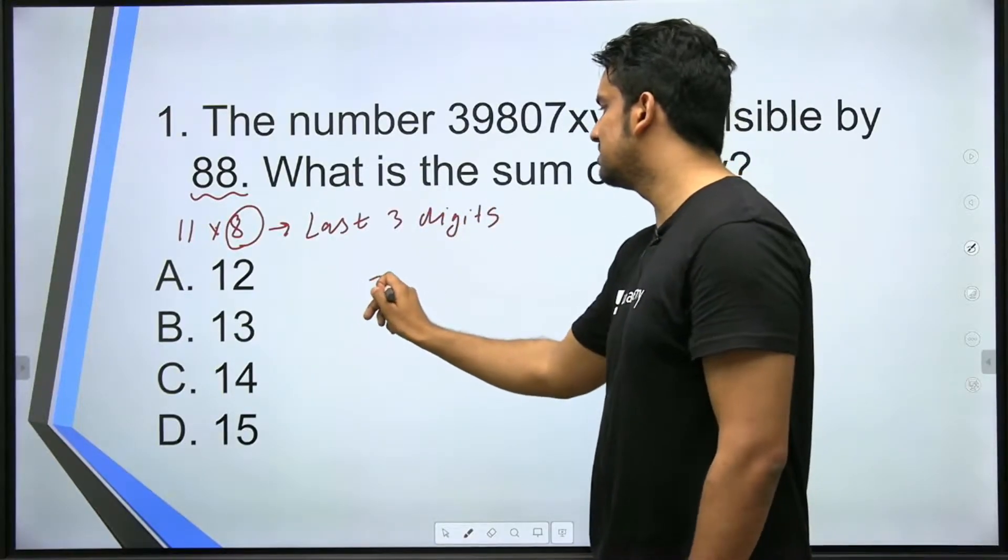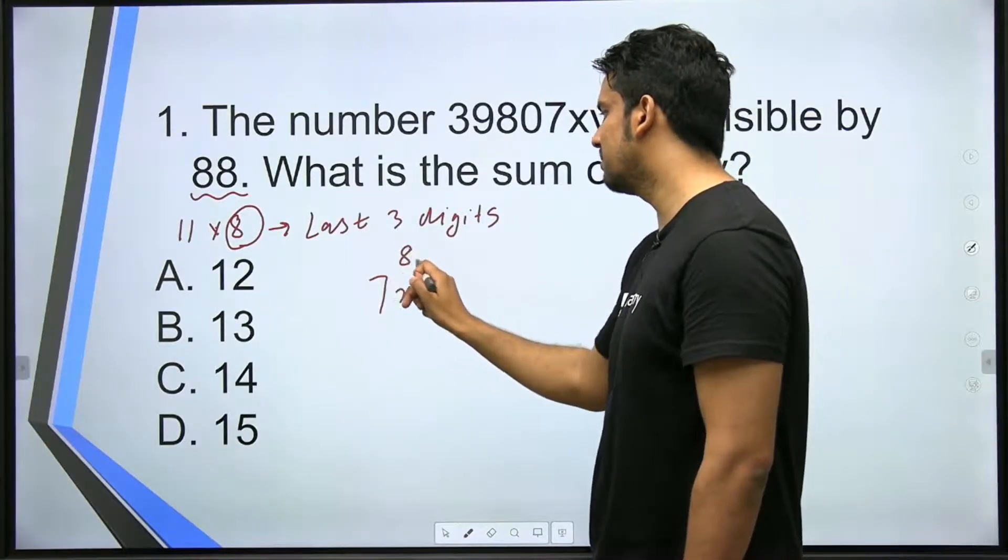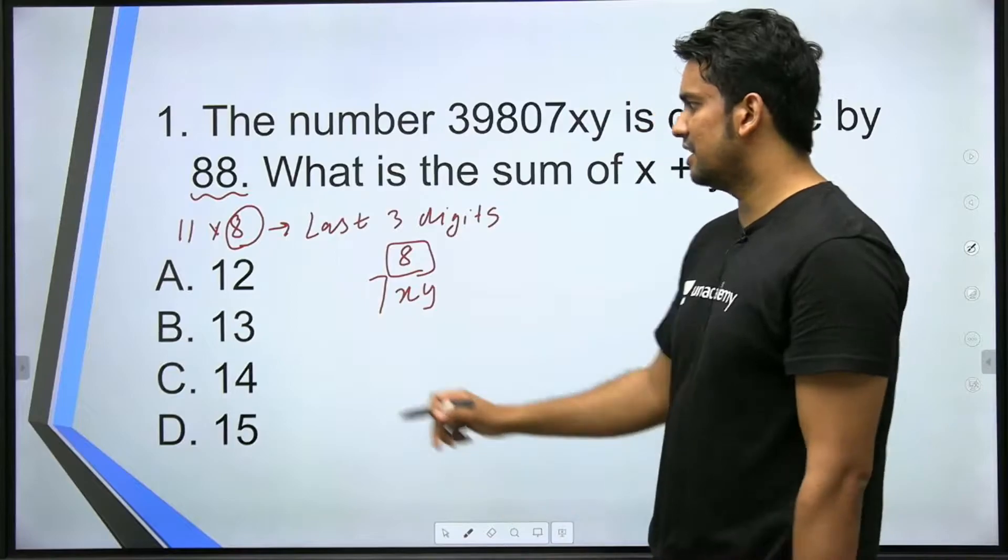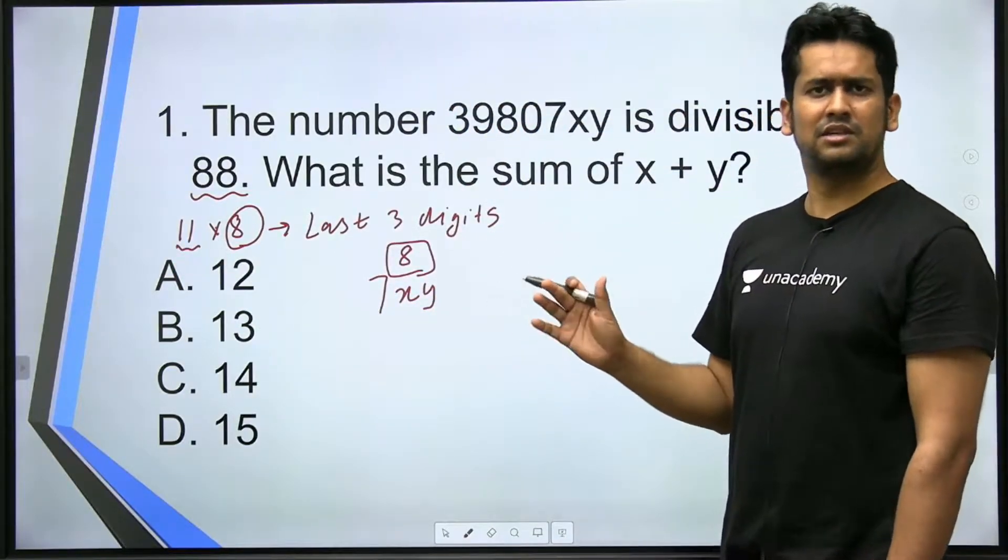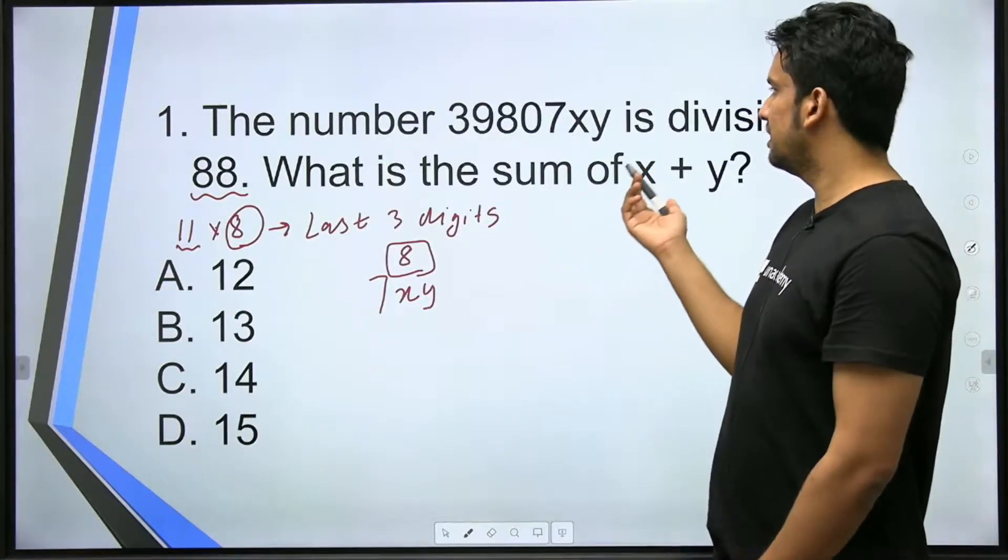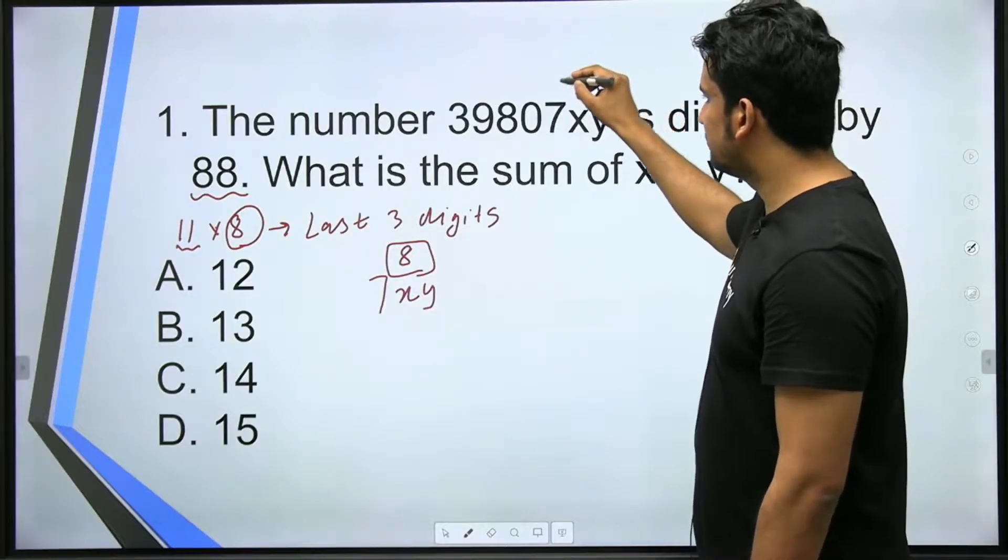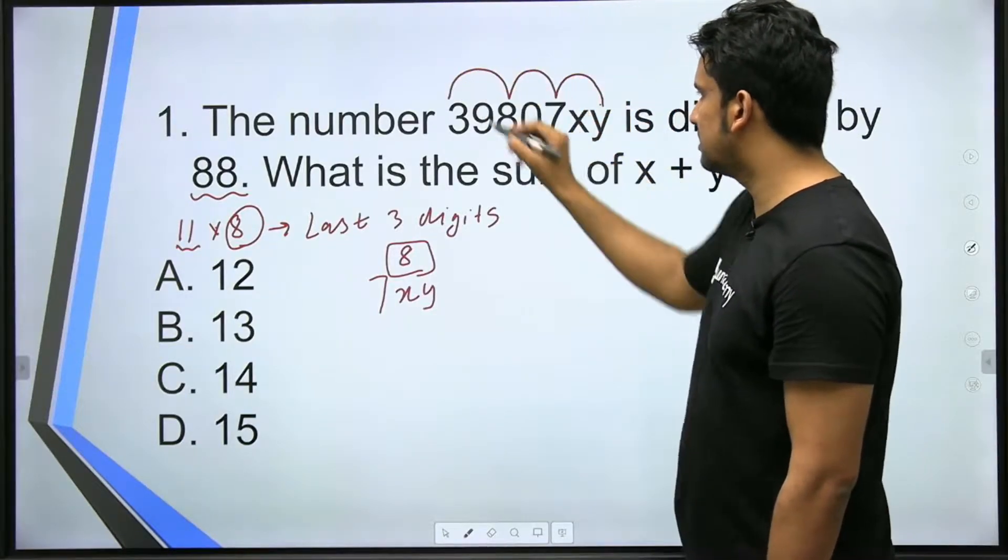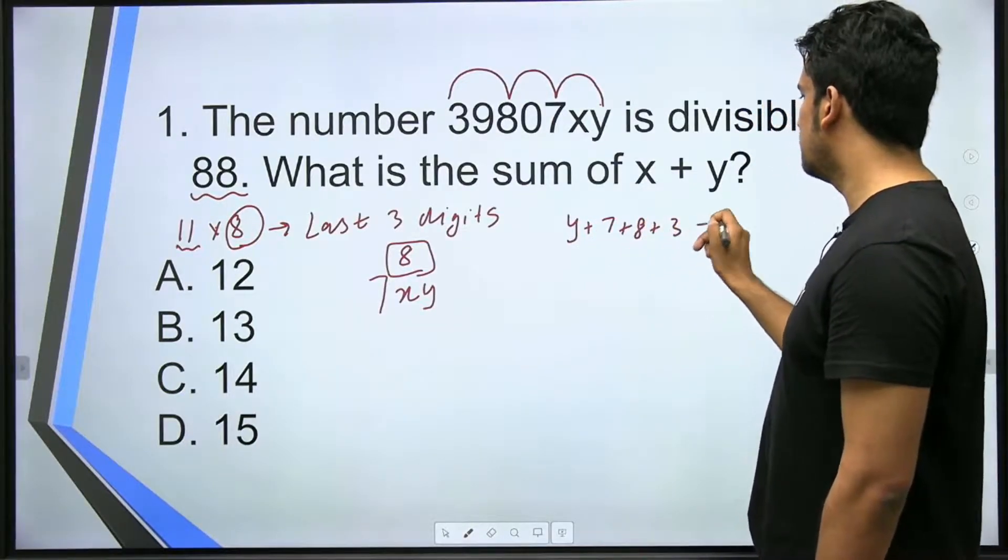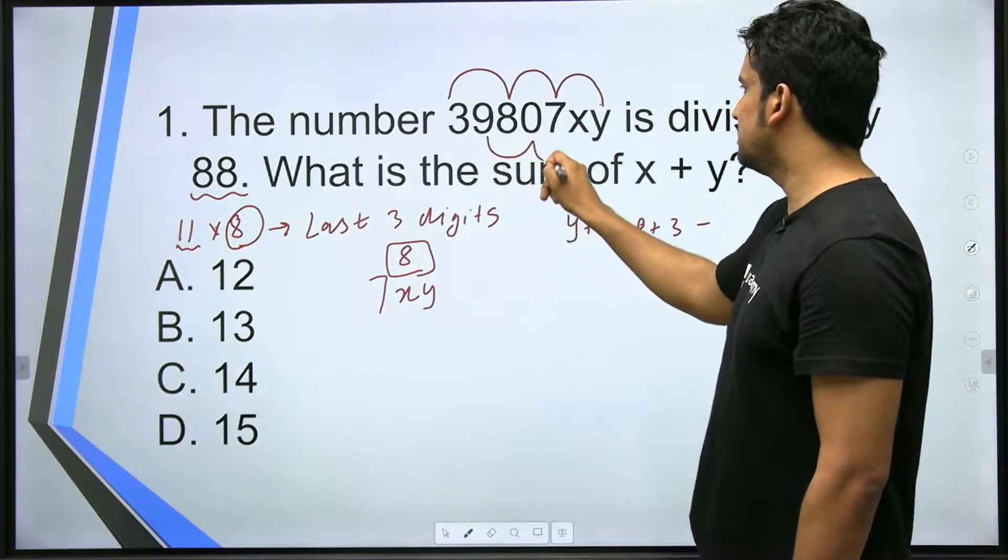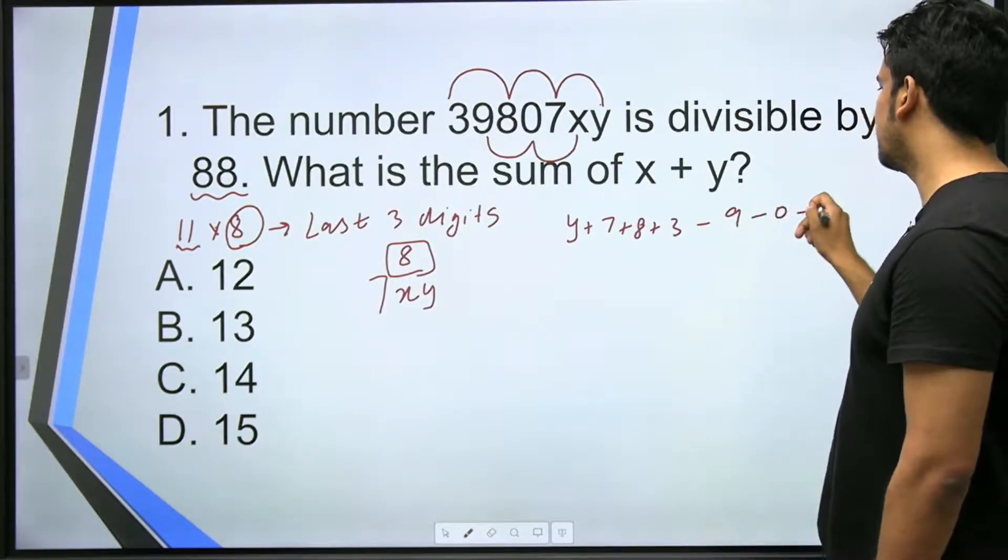So if I look at this number's last three digits, it's 7xy. So 7xy should be divisible by 8. And 11's divisibility rule is alternate digits' sum and difference divisible by 11. So I start here. Alternate digits' sum y plus 7 plus 8 plus 3, so y plus 7 plus 8 plus 3 minus 9 plus 0 plus x.